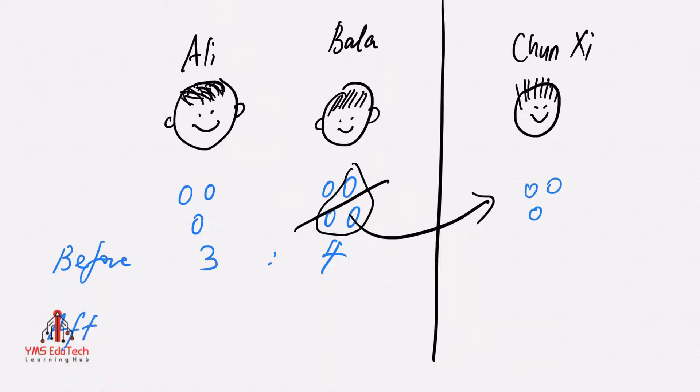However, the number of marbles Ali had did not change because he did not do any transfer to anybody. This is what we call a problem involving external transfer with unchanged quantity. In this video, I'll be sharing with you how to solve this concept using the units method.